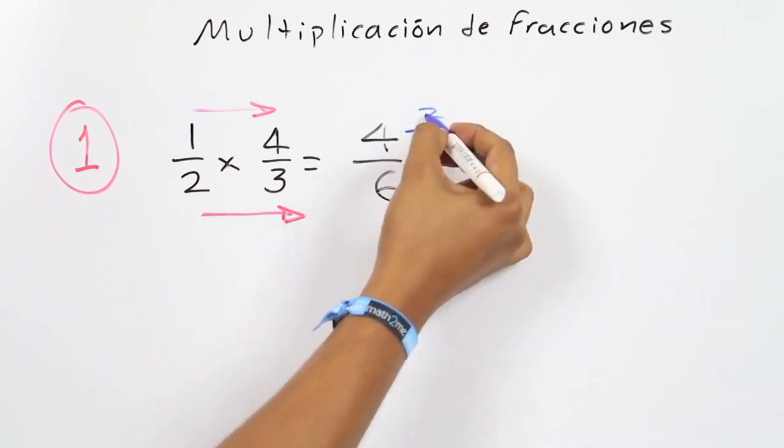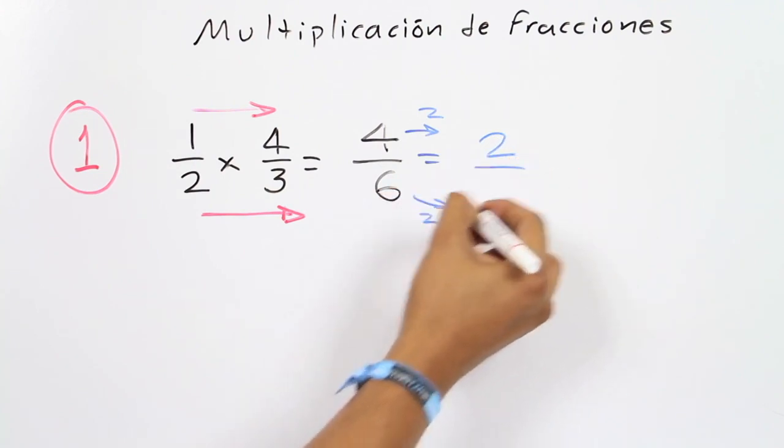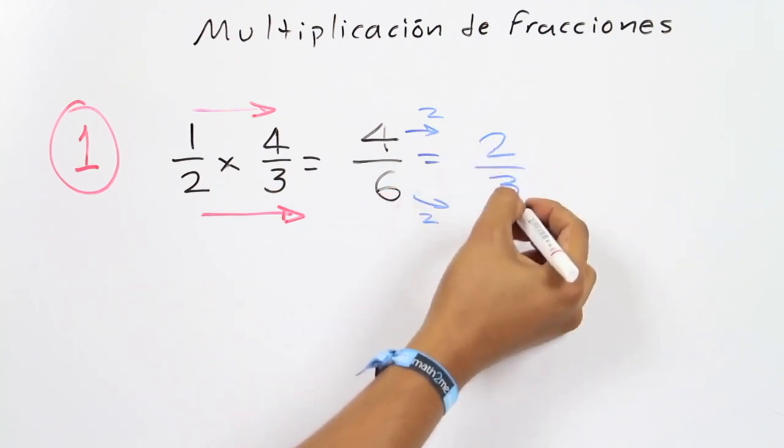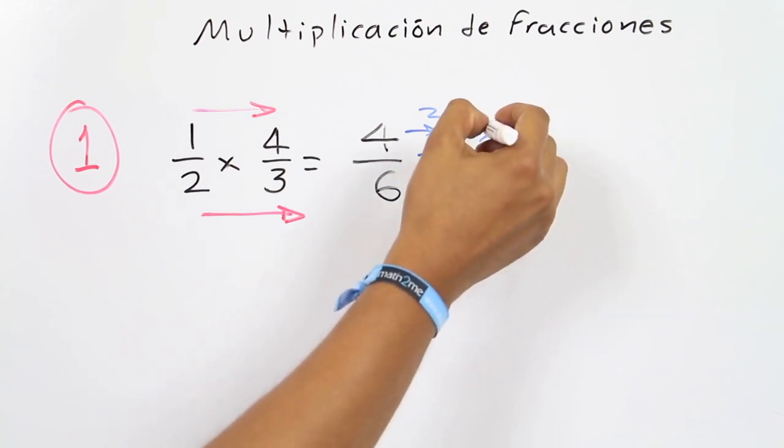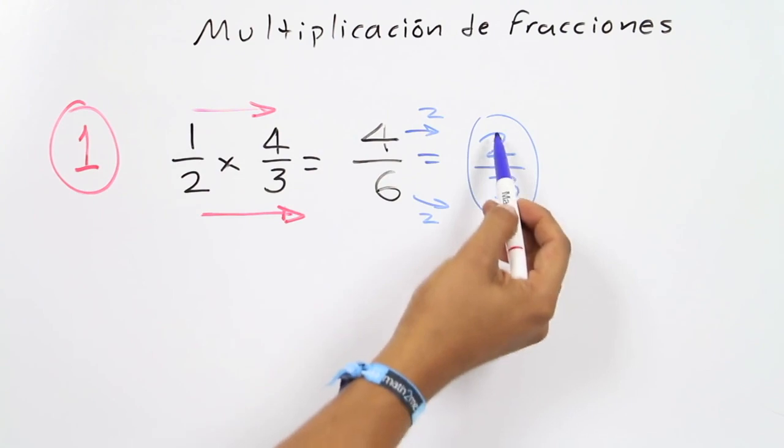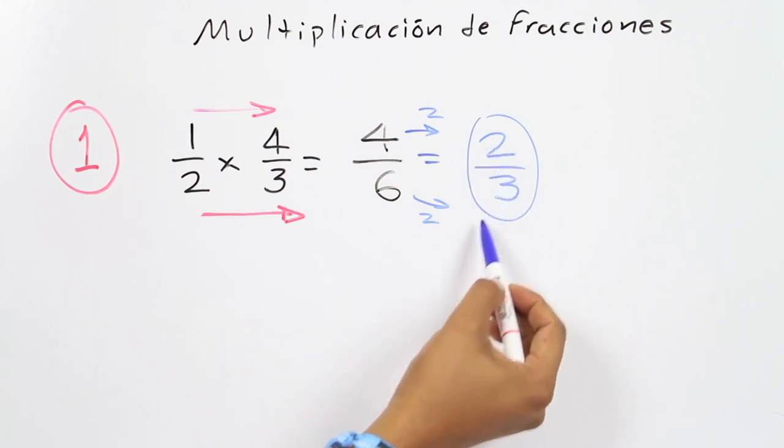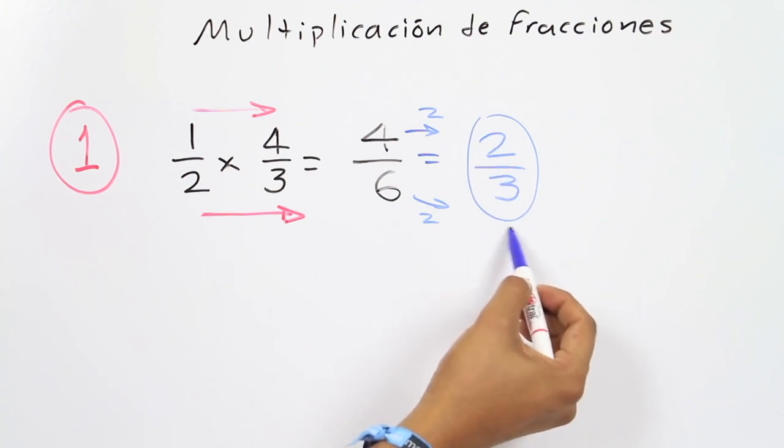So 4 over 2 is 2 in the numerator, 6 over 2 is 3 in the denominator. Now we have the simplest form of this fraction because 2 and 3 are prime numbers. It means they don't have common factors to continue reducing this fraction.